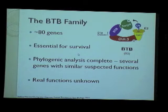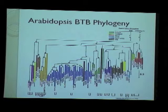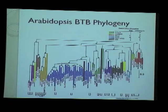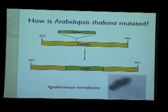Phylogenetic analysis of the BTB family is complete, and several genes with similar suspected functions have been identified, though the real functions of most genes are still unknown. This phylogenetic analysis forms the basis for the work in our lab, which involves creating single or double mutants of certain BTB genes — especially related ones. The genes for which double mutants have been made are indicated at the bottom of the tree with U-shaped marks, and we expect to see phenotypes depending on how critical each gene is for the cell and its development.